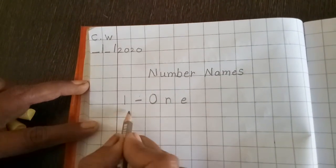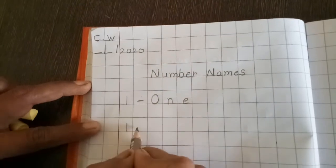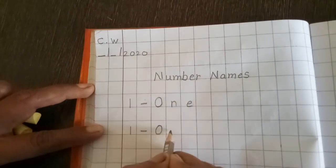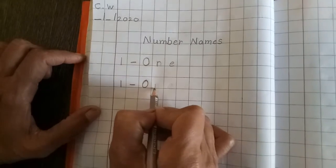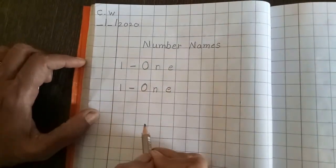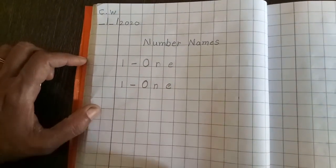Again, you have to write. Leave this box and write here. 1 - Dash. O-N-E. You have to write like this.